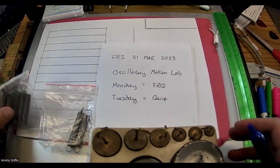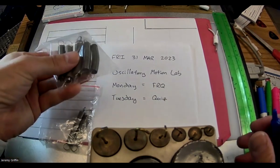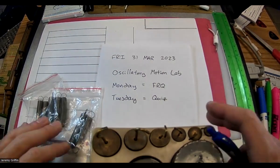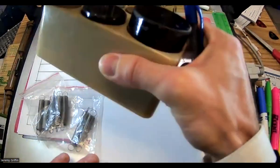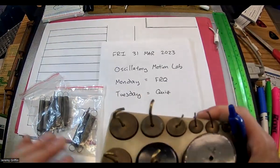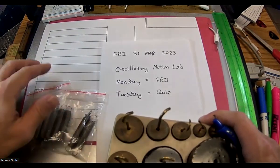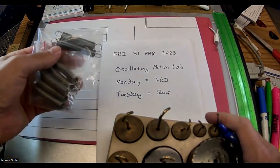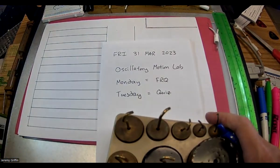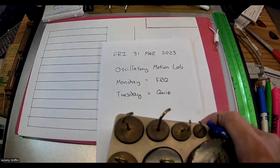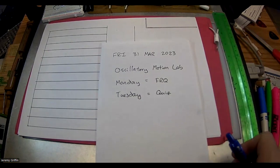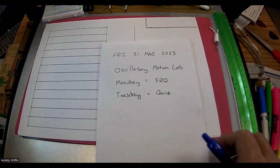We're going to do an oscillatory motion lab. I've got some springs — I've got one hooked up to a ring stand, and I've got a box of weights. We're going to do a bunch of things: figure out the spring constant, and figure out what the oscillatory motion graphs look like — X versus T, V versus T, A versus T.